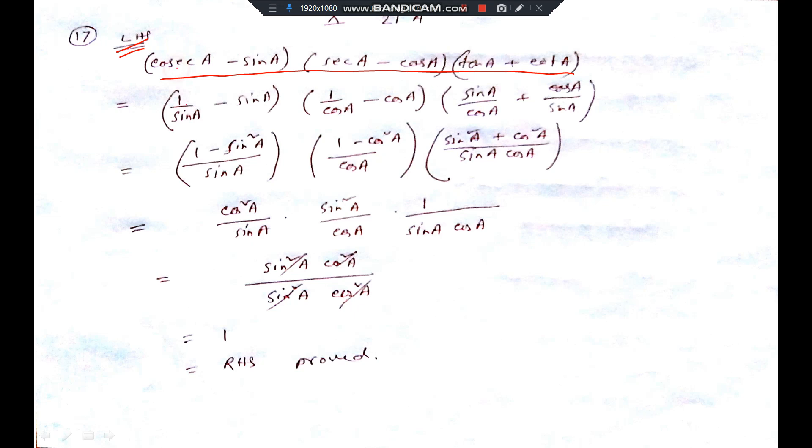So, what I have done? Cosec equal to 1 by sin. This sin, I did not do anything. Sec equal to 1 by cos. And cos, I have not done anything. Tan equal to sin by cos. Cot equal to cos by sin.